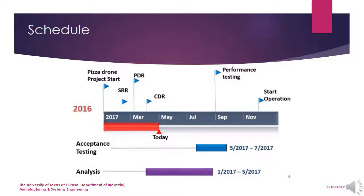As you can see in this diagram, the project started in January 2017. All requirements were finalized by February of that same year. System requirements were also held in February, and the following month was dedicated to design reviews. Within one month, design defects and constraints were corrected. Critical design review was held in April, and all tests will be performed in the next few months, with the project ready for operation by the end of the year.